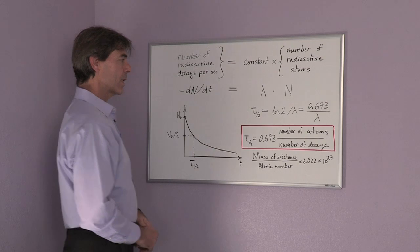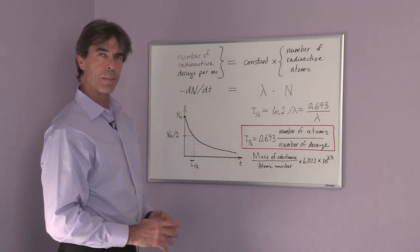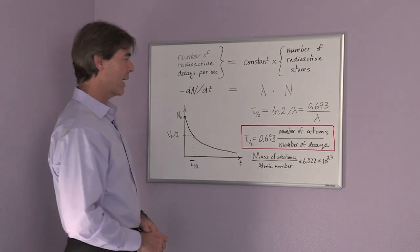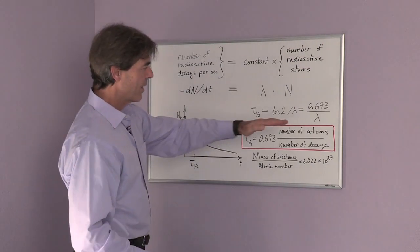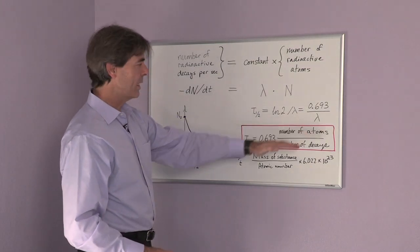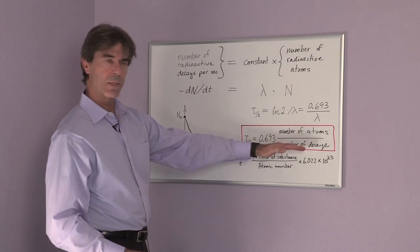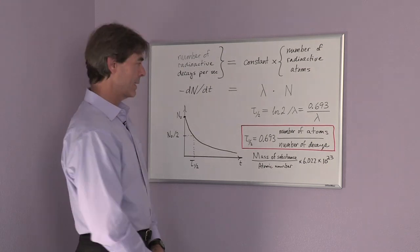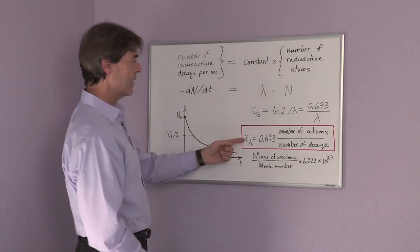The easy formula for determining the half-life of a radioactive isotope is: τ₁/₂ = 0.693 × (number of atoms / number of decays per second). This gives you the half-life.